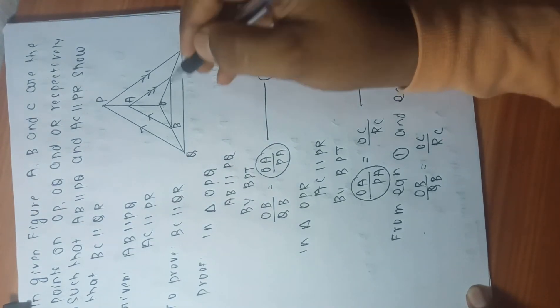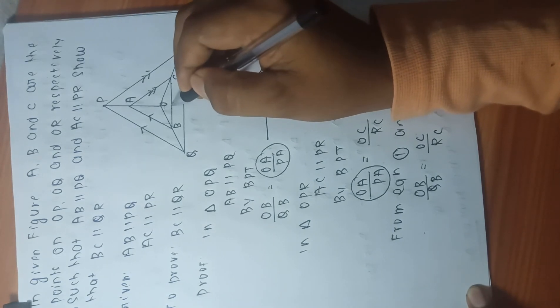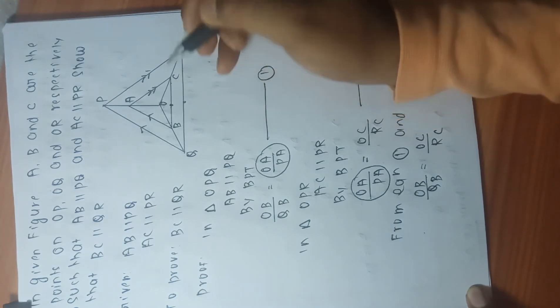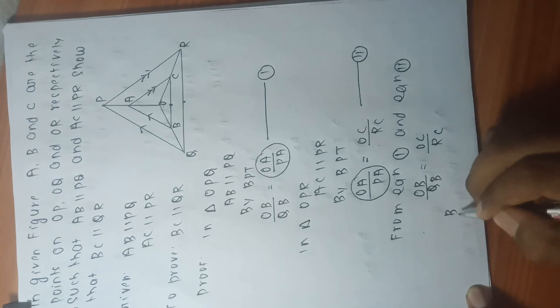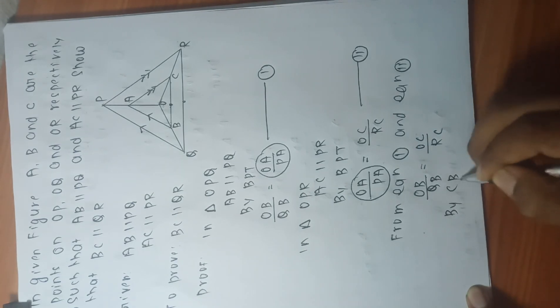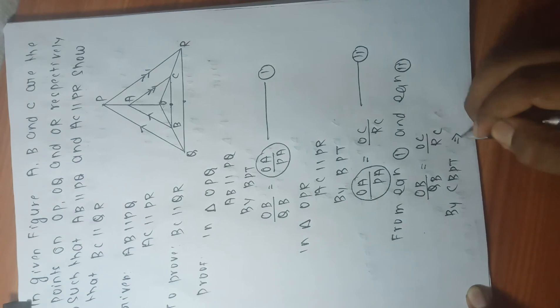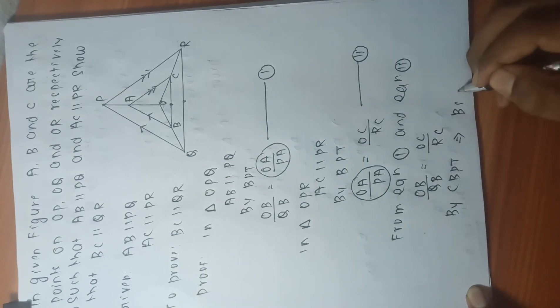By converse of basic proportional theorem, it implies BC is parallel to QR.